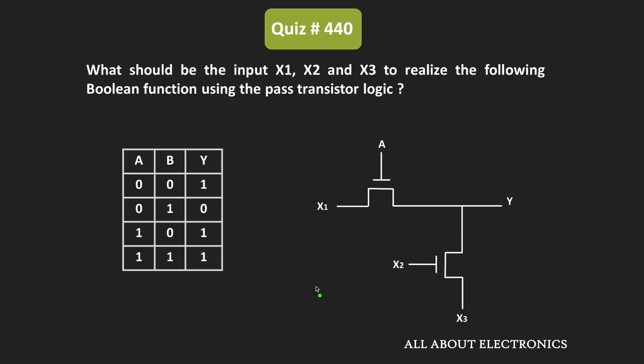Hey friends, welcome to the YouTube channel All About Electronics. In this question, the boolean function is implemented with the help of pass transistor logic. To implement the specific function, we have been asked to find the value of inputs x1, x2, and x3. This boolean function is given in the form of the truth table, so first of all, let us find the expression of this boolean function from the truth table.